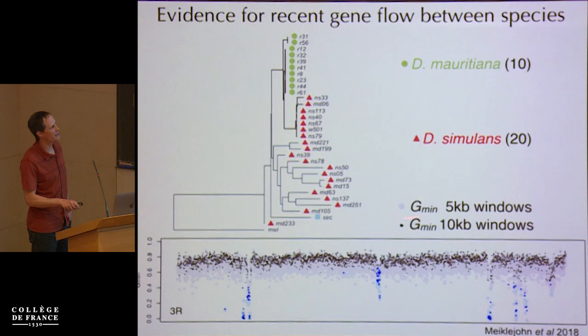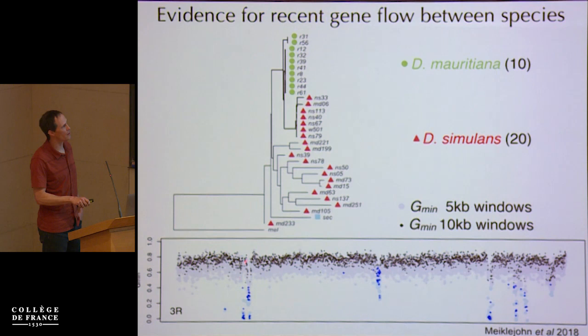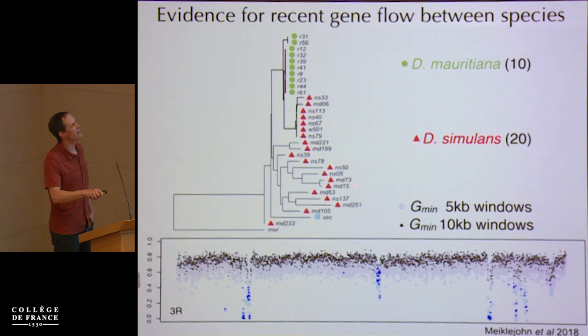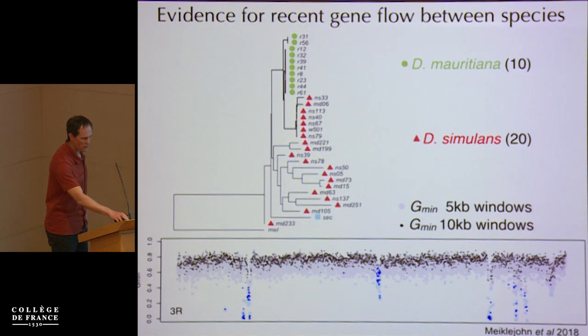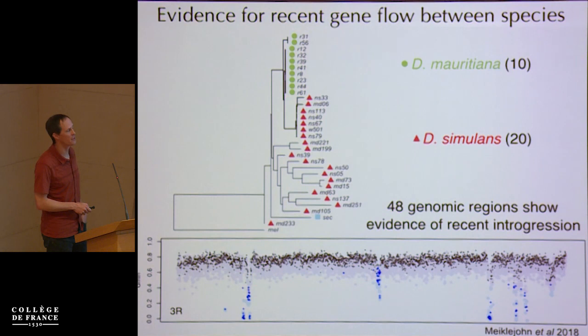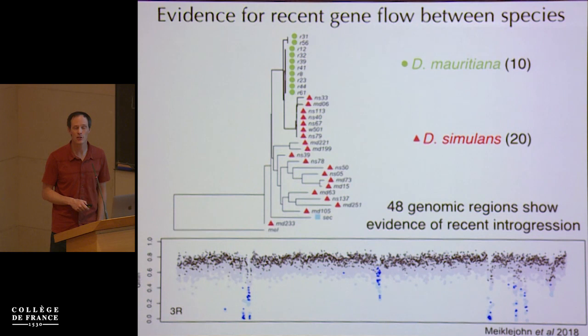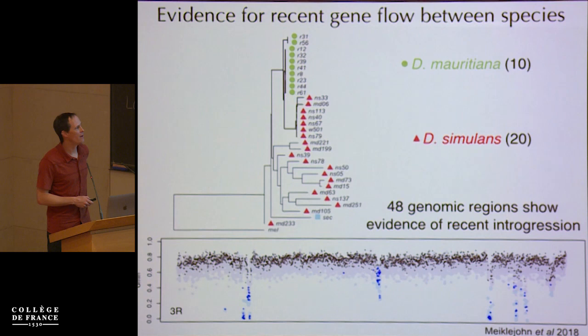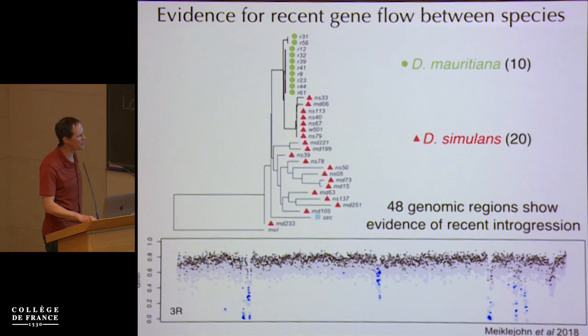We find evidence for recent gene flow between these species. If we calculate Gmin in either 5kb or 10kb windows, we get runs of windows up to 200 or 300kb that show evidence for recent introgression. At one of these loci, the gene tree shows that some simulans alleles are more closely related to *mauritiana* alleles than to other simulans alleles. Across the genome, we find 48 such regions that show evidence of recent introgression. Gmin is not particularly well-powered to detect ancient introgression, so there may have been lots more introgression in the past.